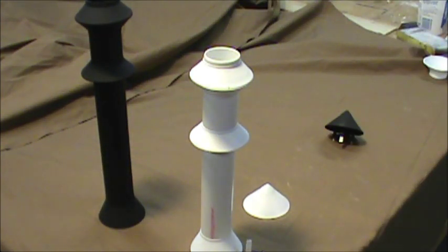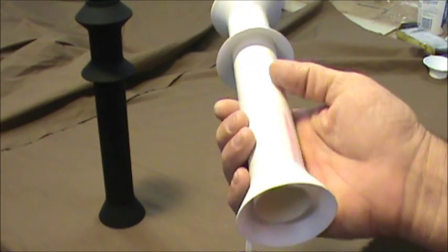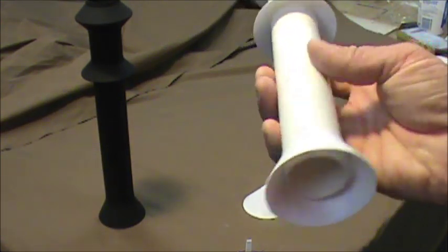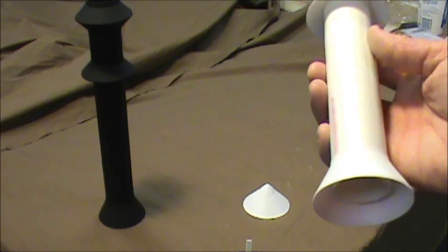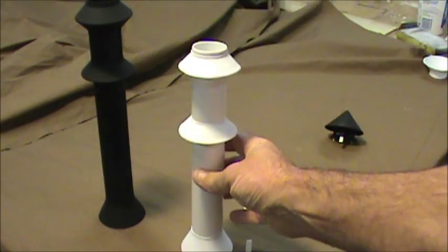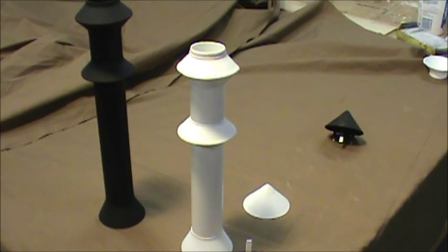Then I shoot the whole thing with a self-etching primer. Let that dry. That gives you good adhesion, good adhesion to the pipe itself and the styrene. Then I go back and I shot this with, I think it was a Rust-Oleum camouflage black. That gives you a good black color. I haven't added any rust yet. I'll do that later.